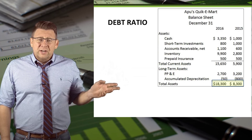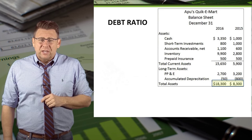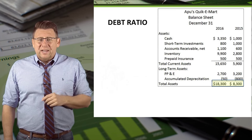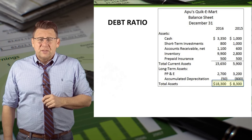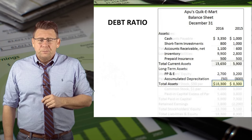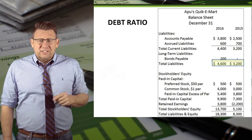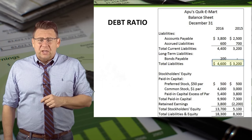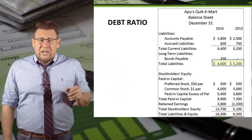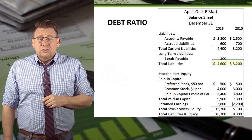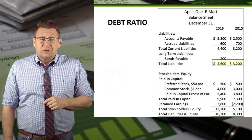Here's an asset section of a balance sheet. We'll use the highlighted total assets to determine the debt ratio. And here's the liability section of the balance sheet. We'll use the highlighted total liabilities to help determine the debt ratio.